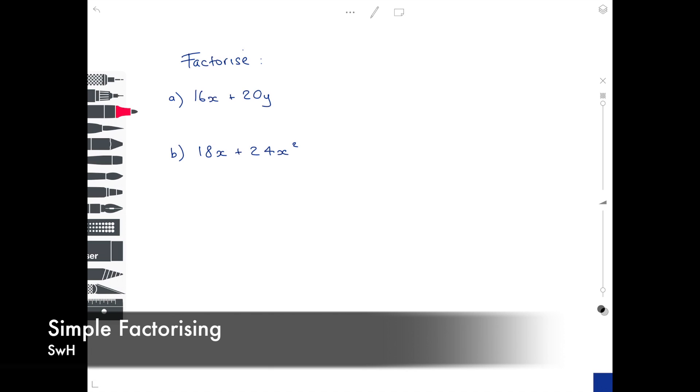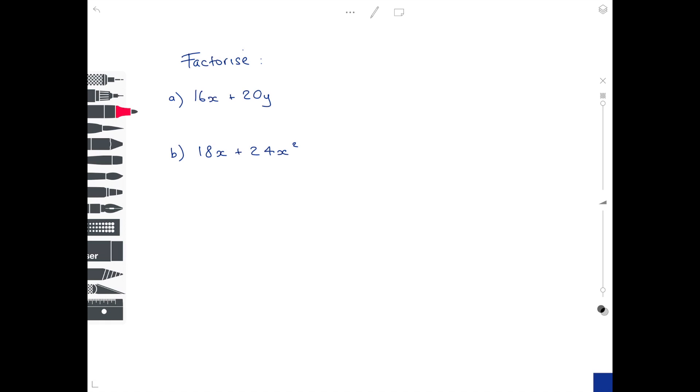Hi guys, in this video we're going to be looking at simple factorizing. All factorizing means is looking at the expression they've given you and working out what is common in both or all parts of the expression, putting them at the front of a bracket and then working out what you would need to multiply that initial expression by to get your original expression. If that's sounding confusing, don't worry. As always with maths, the easiest way to do this is by actually looking at some examples.